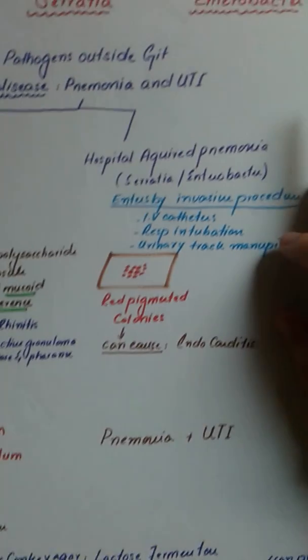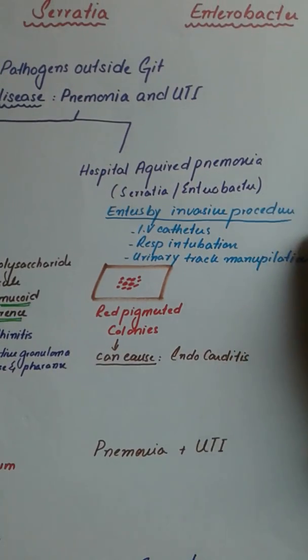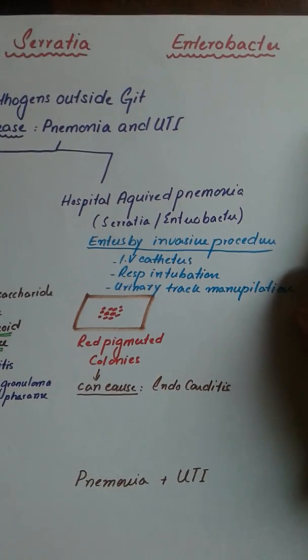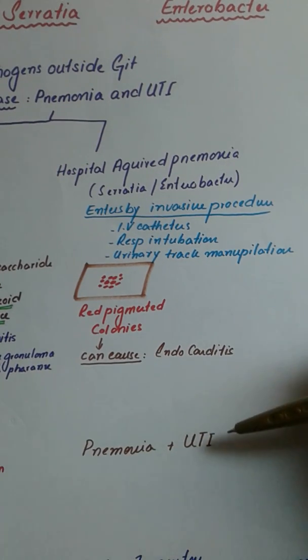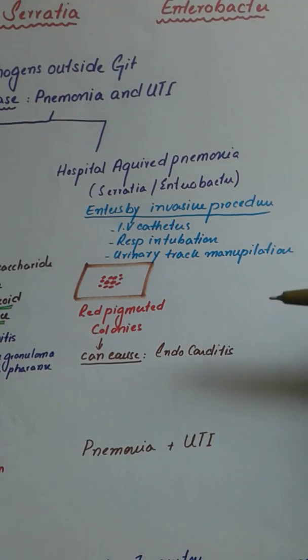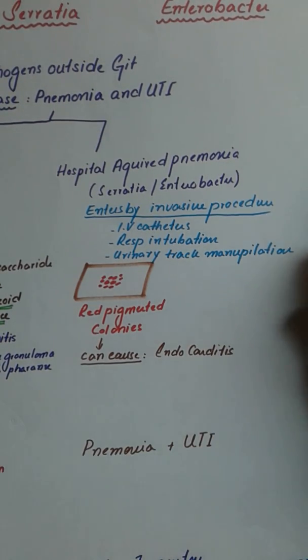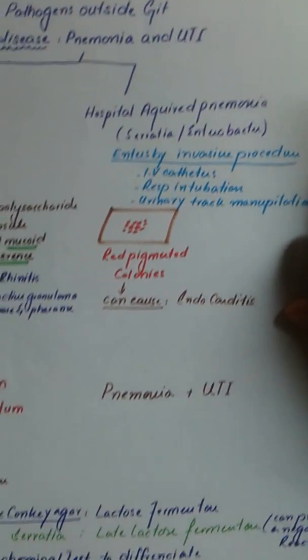The disease caused by Serratia and Enterobacter presents as simple pneumonia with pneumonia-like features and UTI-like features, but it does not cause necrosis or abscess formation.